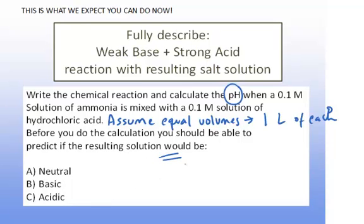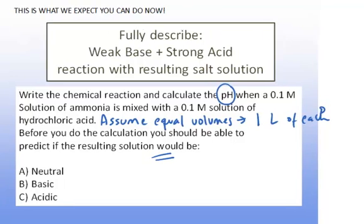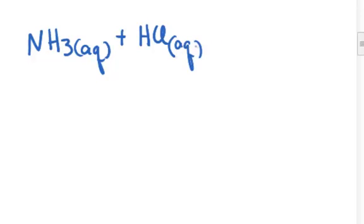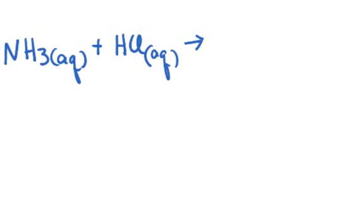Here is how you do that. You look at what's given: in this case we have ammonia, and you need to recognize that ammonia is a weak base. We have an aqueous solution of ammonia being mixed with an aqueous solution of hydrochloric acid, and you need to recognize that hydrochloric acid is a strong acid. When you mix an acid with a base such as this, you end up producing in solution a salt plus water — it's aqueous.